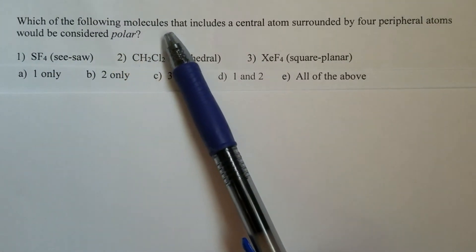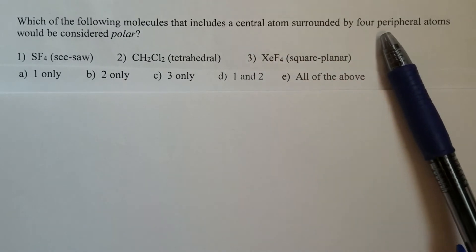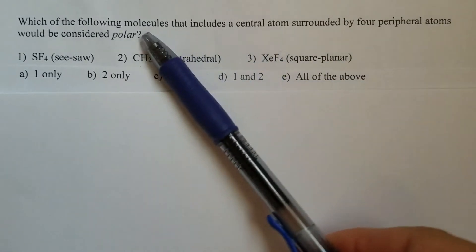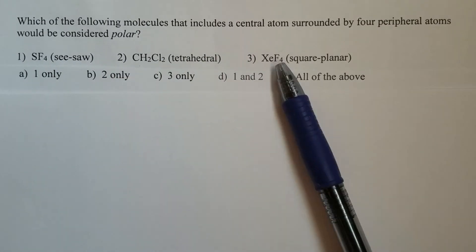Which of the following molecules that includes a central atom surrounded by four peripheral atoms will be considered polar? We have three molecules here.